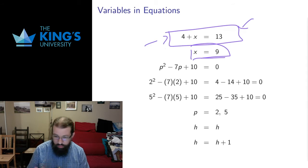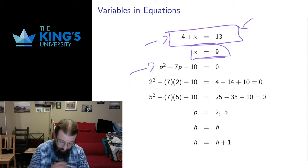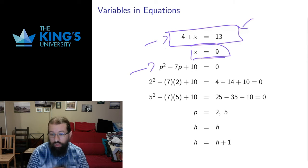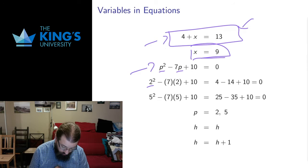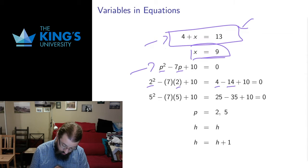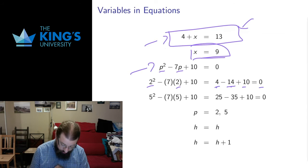These can be simple or these can be complicated. If I look at a more complicated case, this time the variable is called p. If I put in 2 everywhere that p is, 2 squared is 4, 7 times 2 is 14, so 4 minus 14 plus 10 does in fact equal 0. That works.